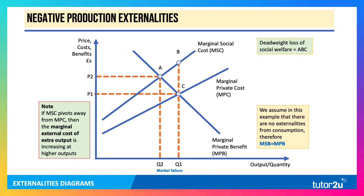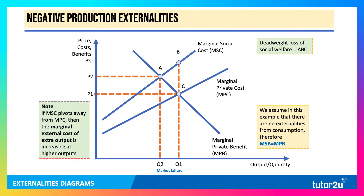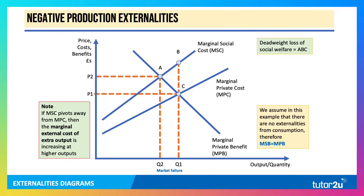First of all, negative production externalities — things like industrial air pollution. The marginal social cost lies above marginal private cost, as shown there, and the gap is the marginal external cost. With negative production externalities there is overproduction, and that leads to a deadweight loss of social welfare equal to the area A, B, C. The social optimum is output Q2; the private optimum is output Q1. There is market failure.